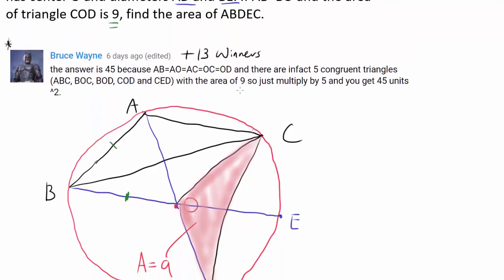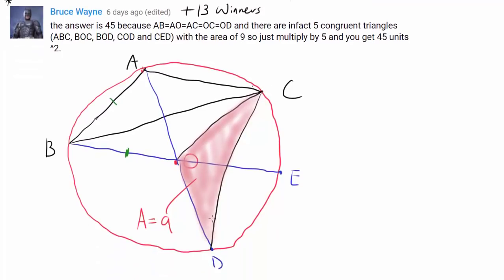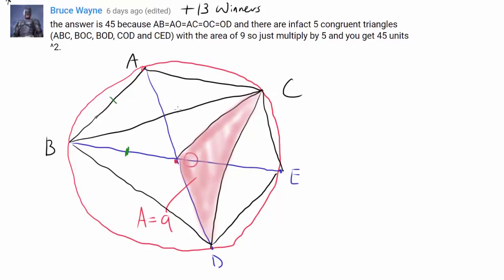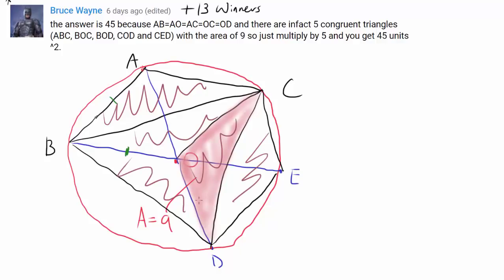We wish to find the area of pentagon ABDEC. From this drawing, it seems like we have 5 congruent triangles. Since we tried our best to draw it accurately, it seems like all five of these triangles have the same area. So our answer appears to be 9 times 5, which is 45. And indeed, this is actually the answer.